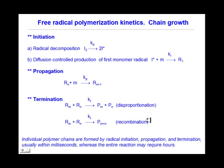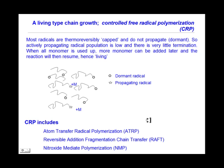A different type of chain growth reaction is controlled free radical polymerization. Here, most radicals are thermoreversibly capped and do not propagate, so they are in a dormant state. The actively propagating radical population is low and there is very little termination. When all the monomer is used, more monomer can be added later and the reaction will resume — this is why it's called living. CRP includes atom transfer radical polymerization, reversible addition-fragmentation chain transfer, and nitroxide-mediated polymerization.